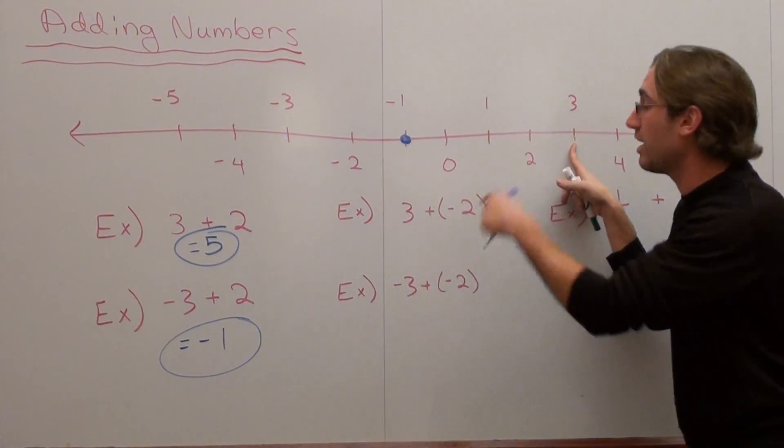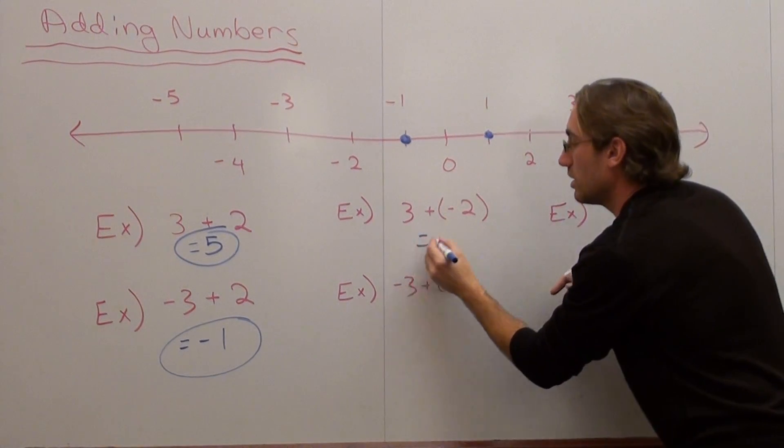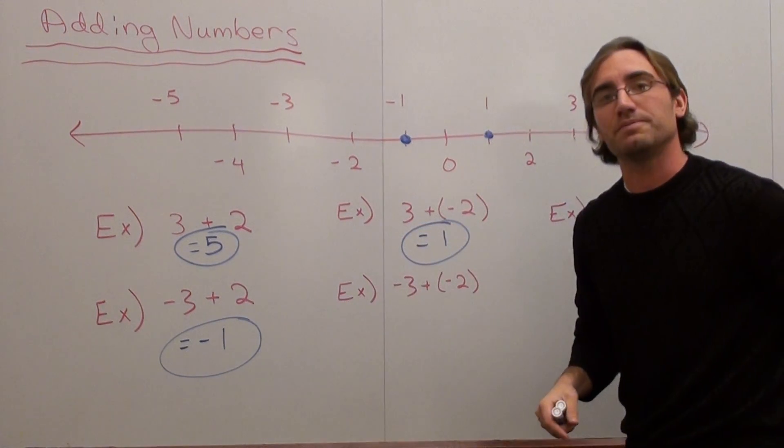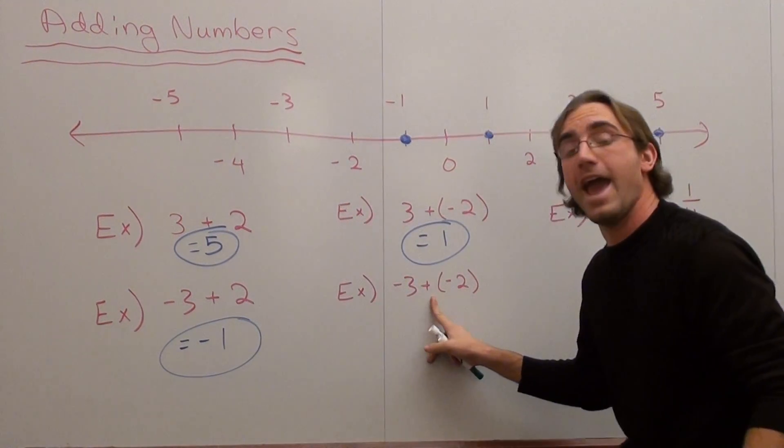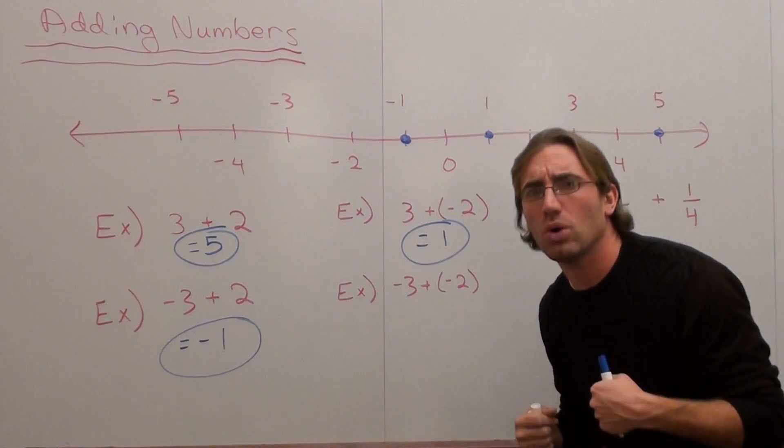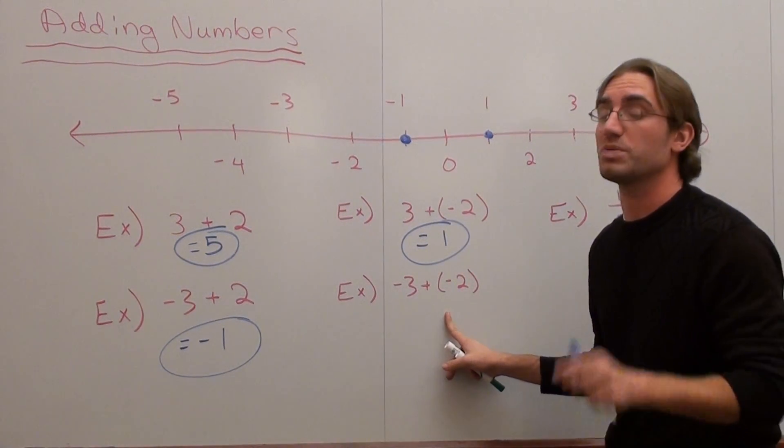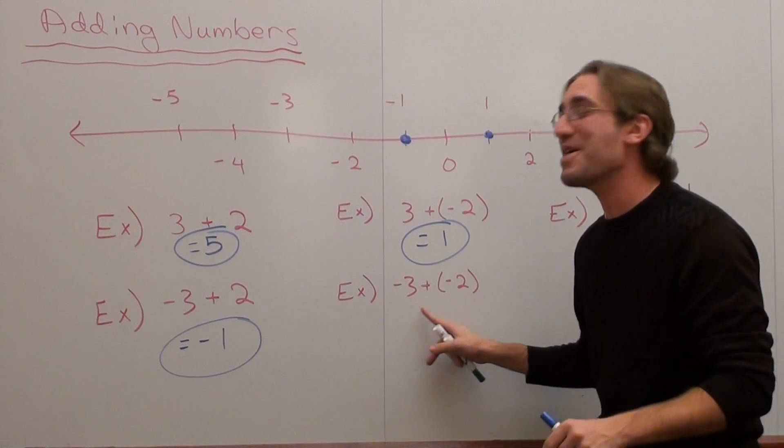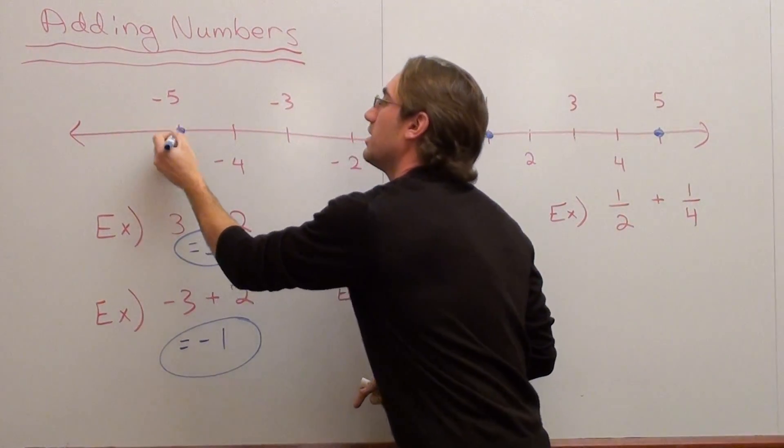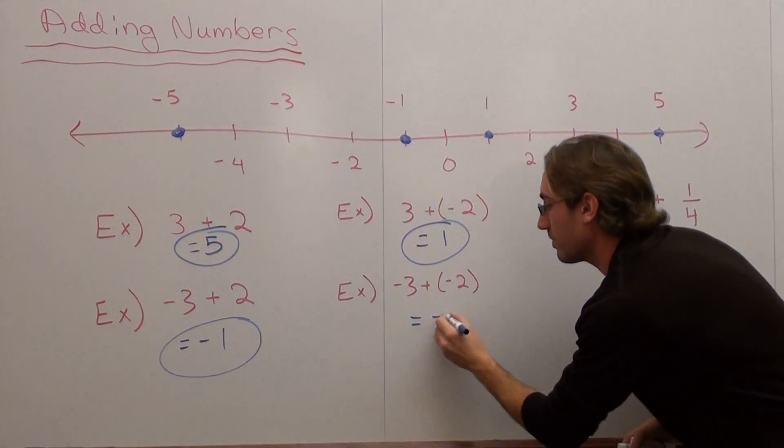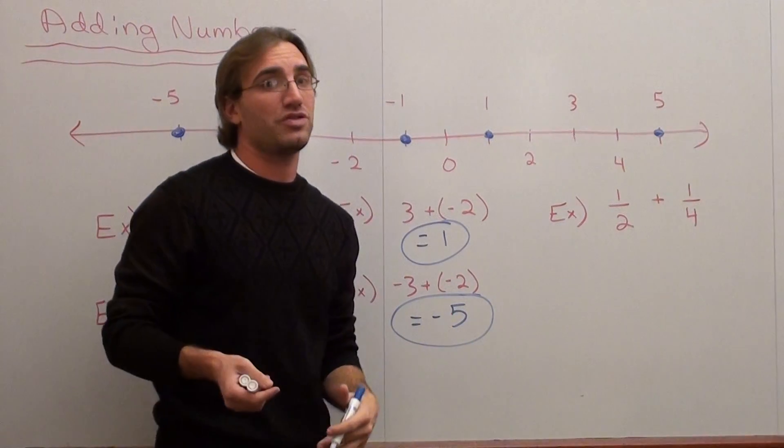Now here we start with negative 3 and we're going to add negative 2, so we're going to make it even colder than negative 3. How many spots do we move from negative 3? We move negative 2 spots to the left: 1, 2, and your answer is negative 5.